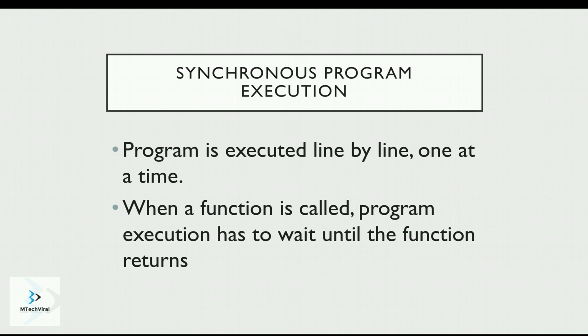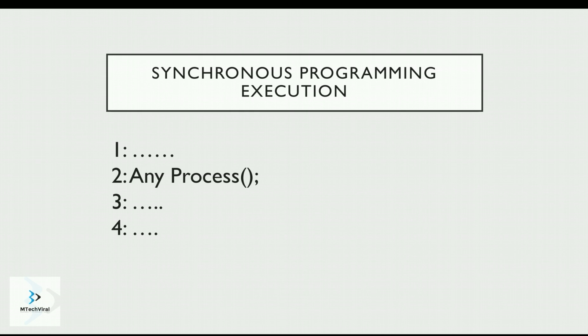We'll start with synchronous program execution. In a synchronous programming model, the program is executed line by line, one at a time. When a function is called, the program execution has to wait until the function returns, and then it continues with the next line. Let's see this with an example — say we have a program with four lines, and on the second line we are calling a function.